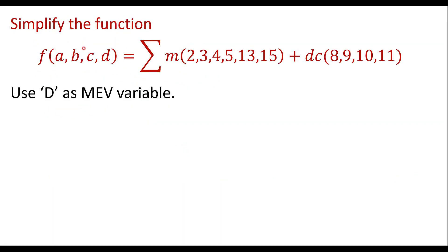Let me consider one example based on MEV technique. Simplify the function F(A, B, C, D) where the minterms are 2, 3, 4, 5, 13, 15 and don't care values are 8, 9, 10, and 11. Use D as the MEV variable. If we simplify using KMAP, we need a 4-variable KMAP with 16 cells. But using MEV KMAP, we need only 8 cells — a 3-variable KMAP — to handle 4 variables. That is the beauty of MEV technique.